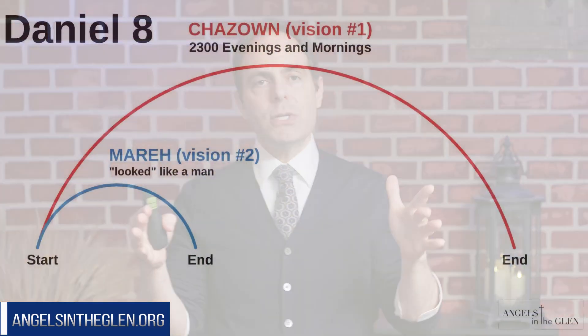We're going to unpack all this in detail in this particular study, and we're going to show you on the screen that these two visions — the hadzone and the mare, vision one and vision two — are both related. They both have the same starting point, but they have different ending points. And this will demonstrate that we're living in the very final days of Earth's history.